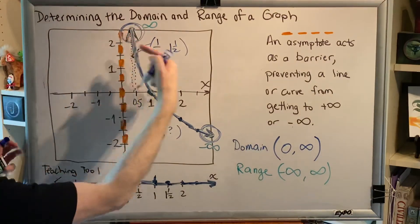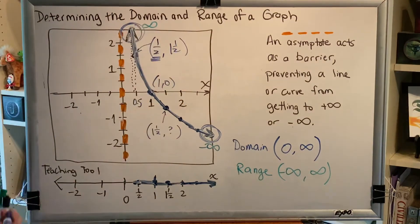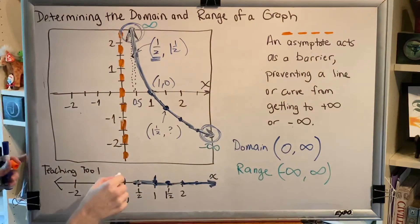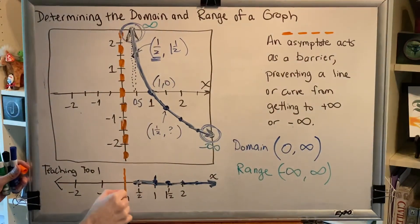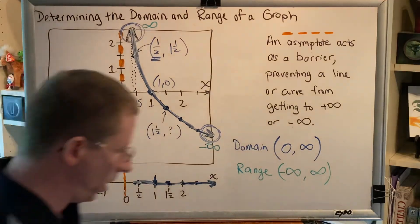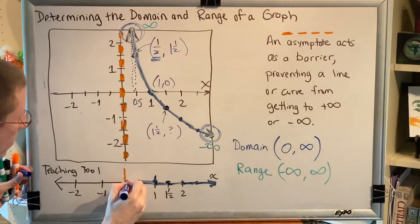So in between half and one I have all those dots. In between 0.4 and 0.5 I have all those dots. And this is going forever, but it's still blocked by the asymptote. Zero is as far as we can go, so we have an open dot at zero.